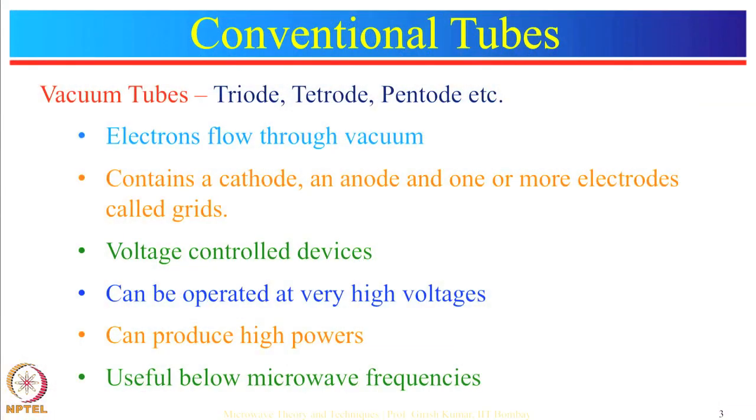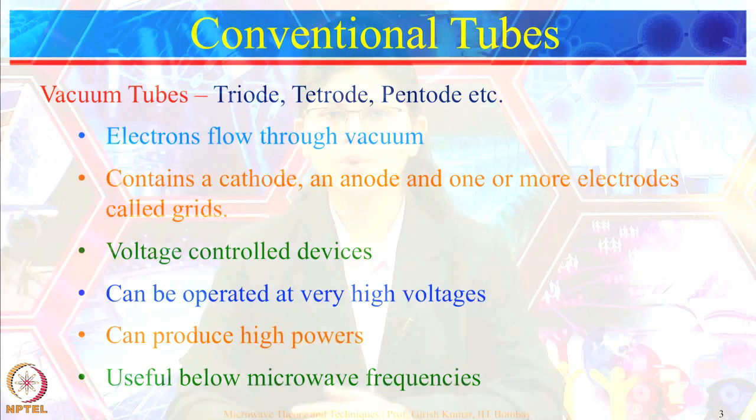Vacuum tubes such as triodes, tetrodes, and pentodes are examples of conventional tubes. Vacuum tubes are electronic devices in which electrons flow through vacuum from one electrode to another. Generally, vacuum tubes contain one cathode, one anode, and one or more grids. These grids are used for controlling actions. Since vacuum tubes are voltage control devices, grid voltages are the controlling voltages. Vacuum tubes can be operated at very high voltages and can generate high powers.